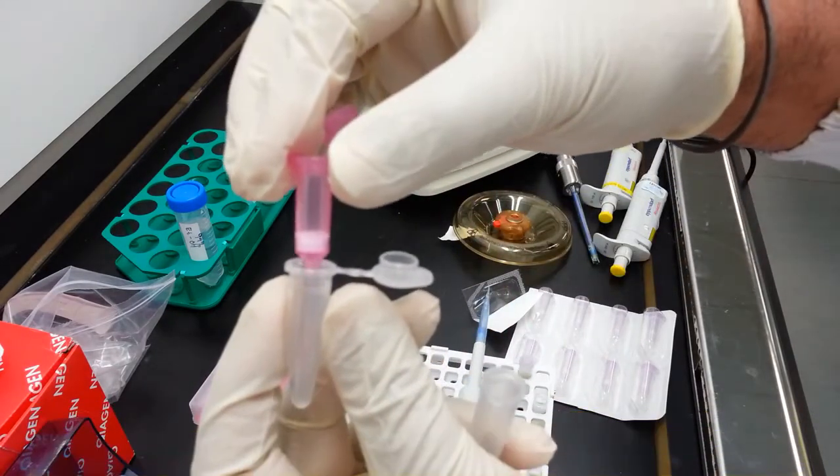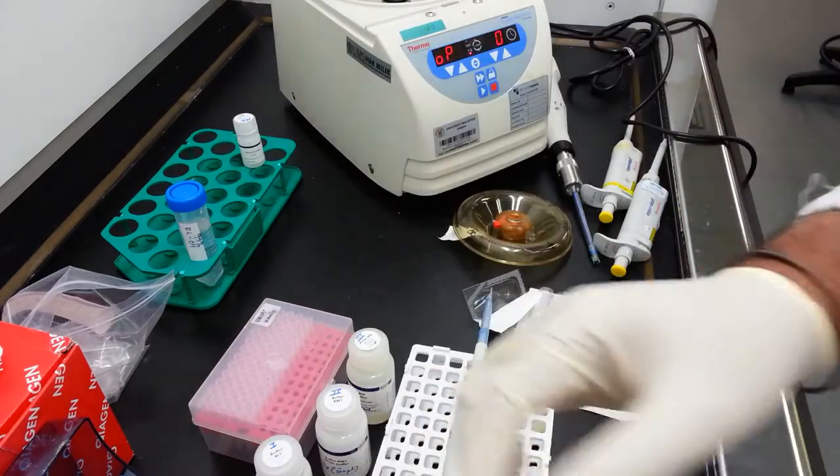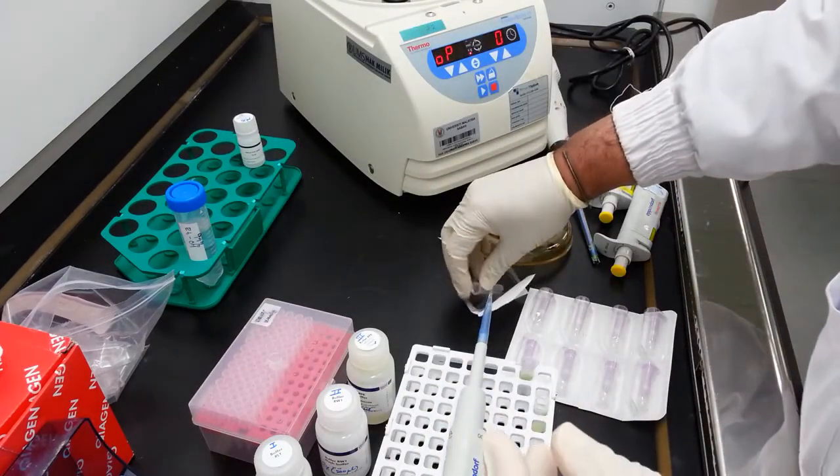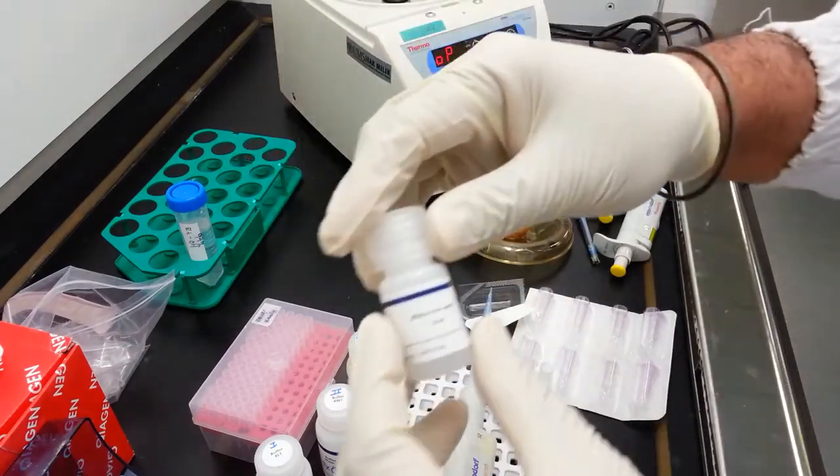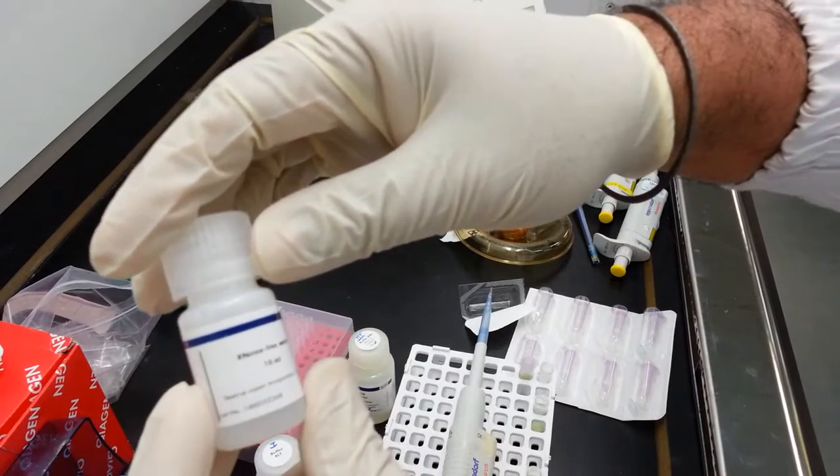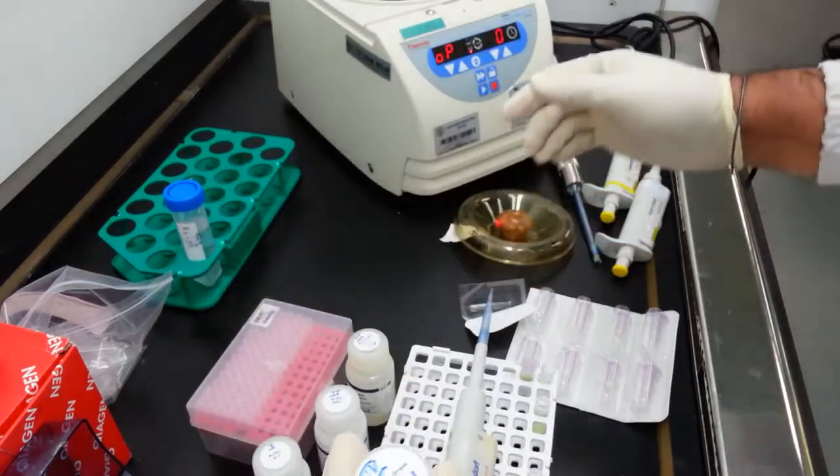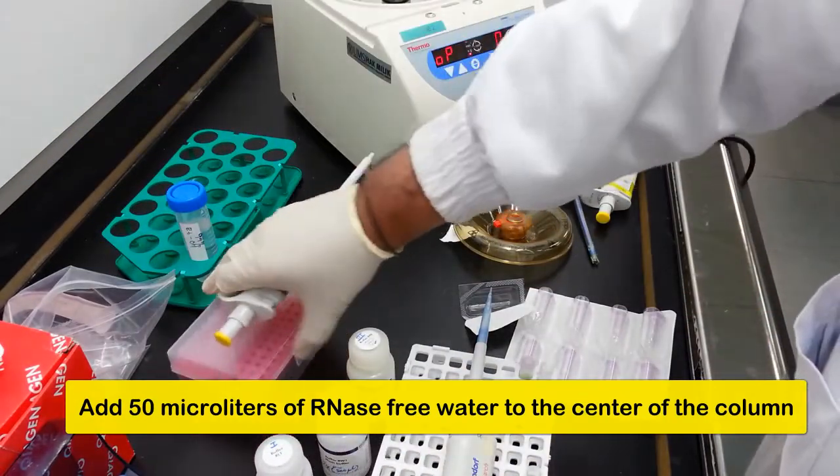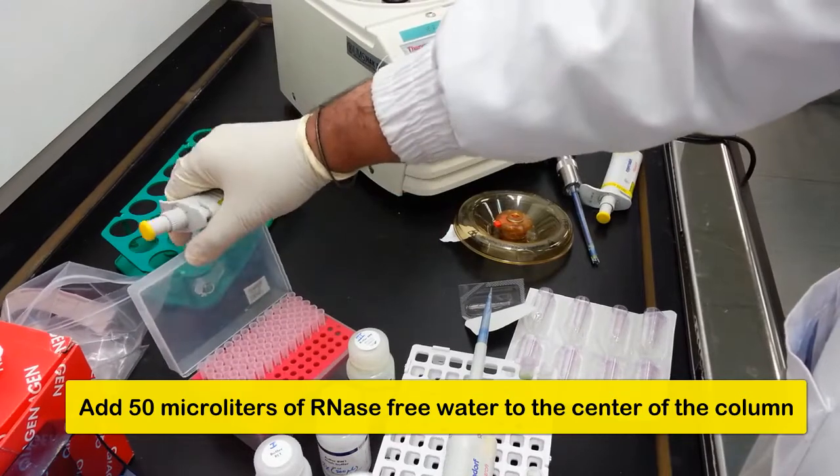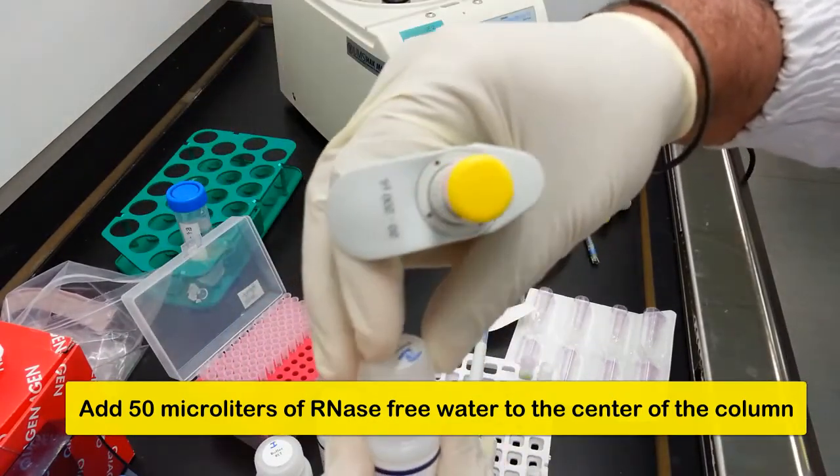Transfer the pink column into this tube. Rehydration can be carried out using RNA-free water which is supplied with the kit. You can add up to 50 microliters of this RNA-free water to the upper part of the tube.